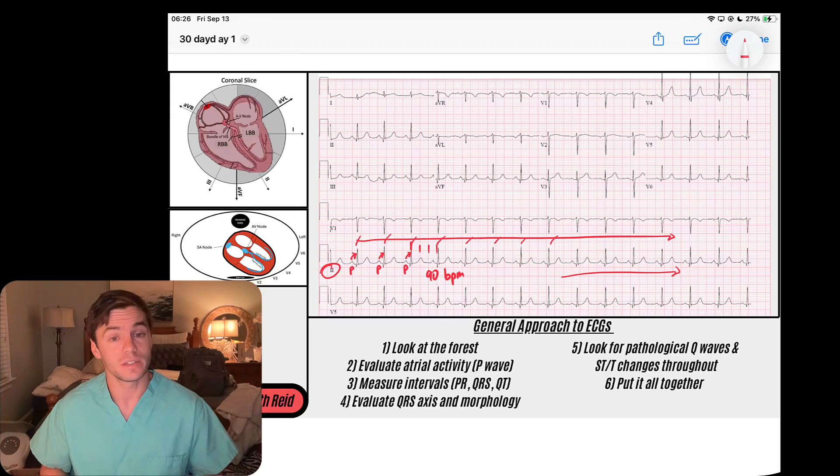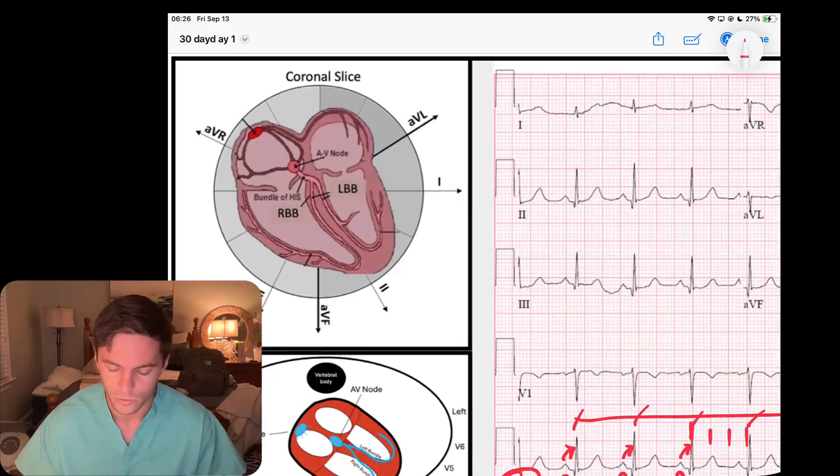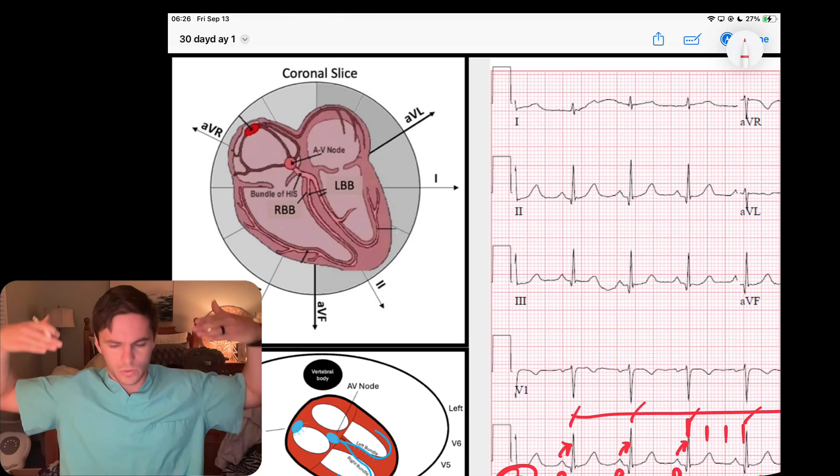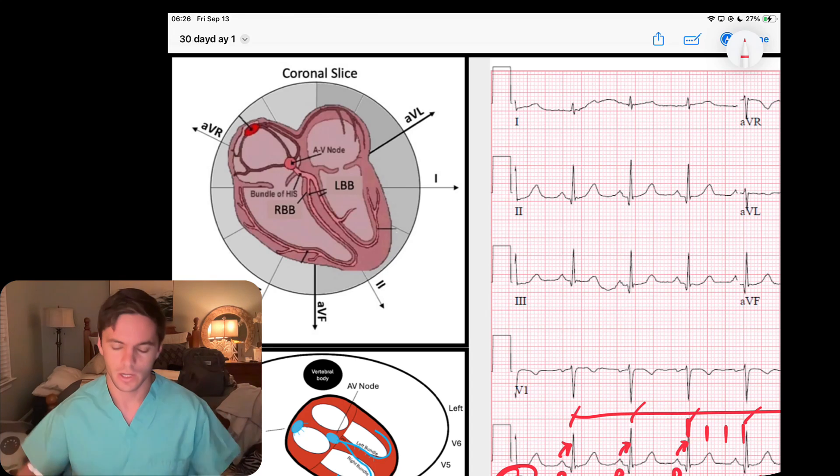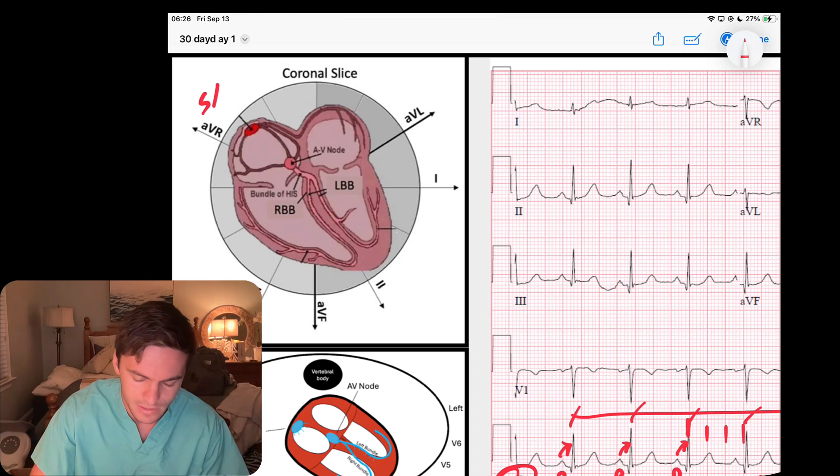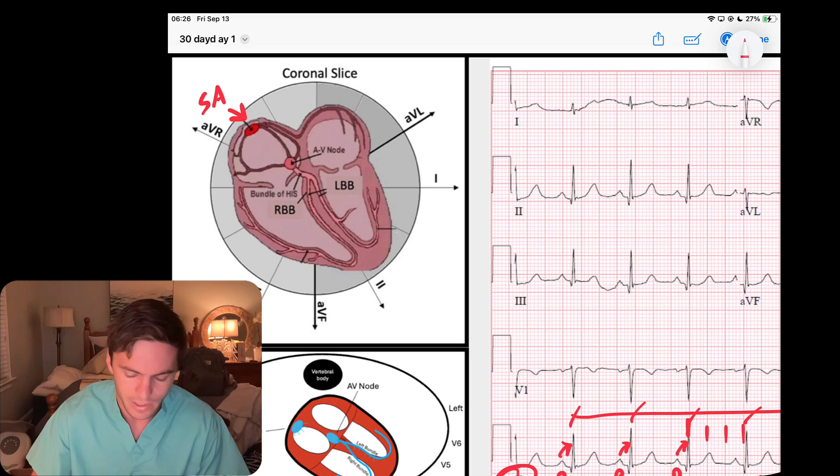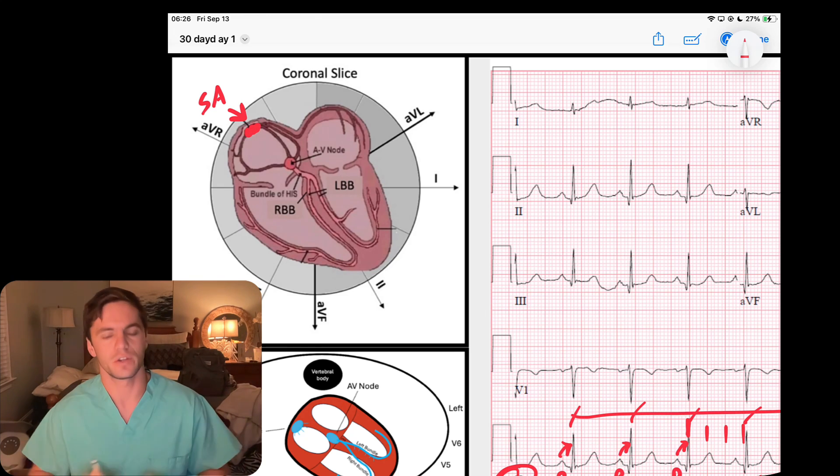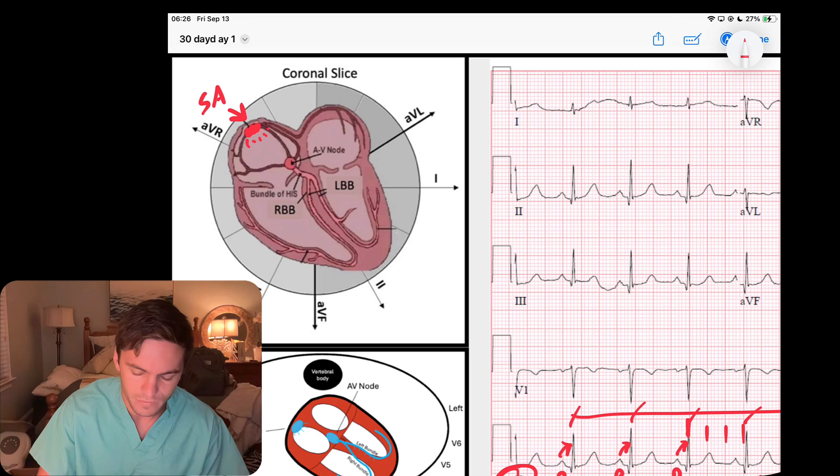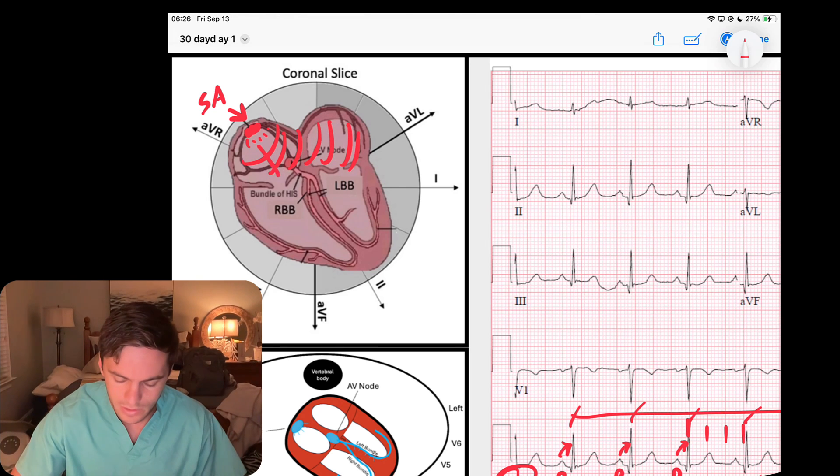If I take a look at the heart here in coronal view—recall the sinus node or SA node sits high in the right atria. The sinus node fires off and creates those P waves. If it fires off, it creates P waves that travel down into the left.